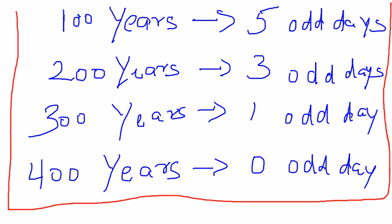This result will be helpful in the next video where I'll discuss finding the exact day from a given date — for example, if asked to find the day for 3rd January 1976. You can memorize this result or re-derive it using the concept. That's it for this video. Hope you liked it — do subscribe to our channel. There are lots more videos coming, so stay tuned. I'll see you in the next video. Bye!